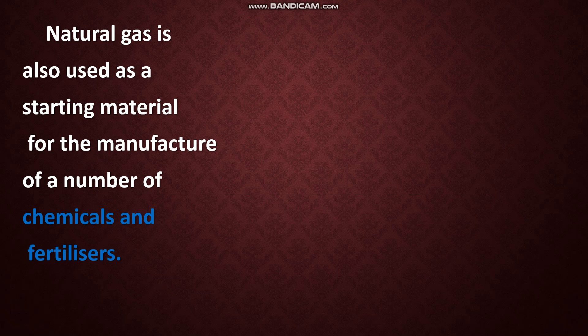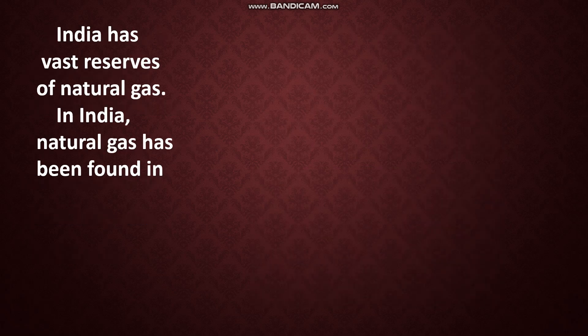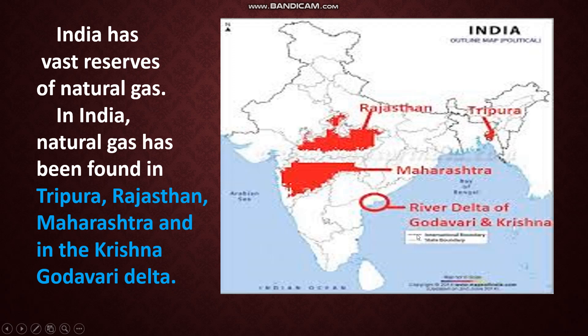Natural gas is also used as a starting material for the manufacture of a number of chemicals and fertilizers. India has vast reserves of natural gas. In India, natural gas has been found in Rajasthan, Tripura, Maharashtra, and the river delta of Godavari and Krishna.